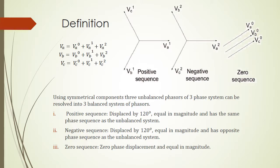We start from the definition. Let's assume we have a three-phase system with three-phase voltages from phase to neutral as vA, vB, and vC. We assume that they are made from three component sequences: zero sequence, positive sequence, and negative sequence. For the zero sequences, vA0, vB0, and vC0 — they are the same. Notice that we are talking about vectors or complex numbers, so they are the same in amplitude and also the same in phase angle.